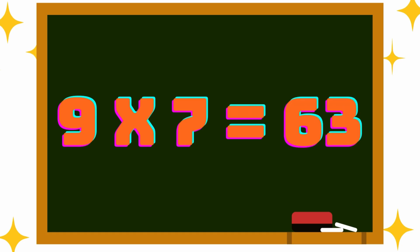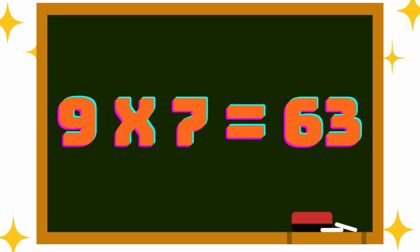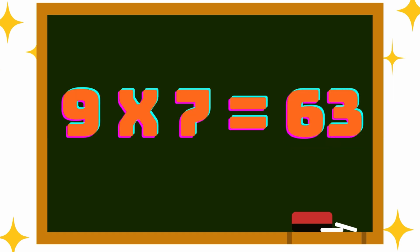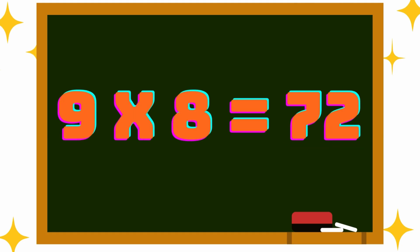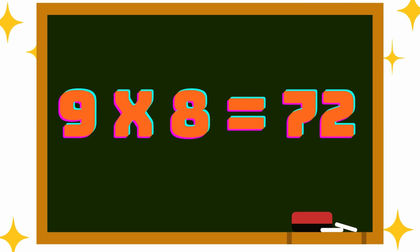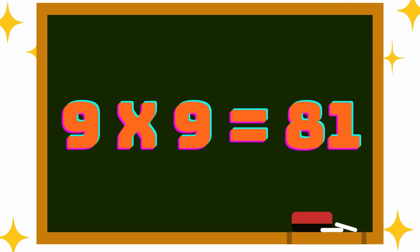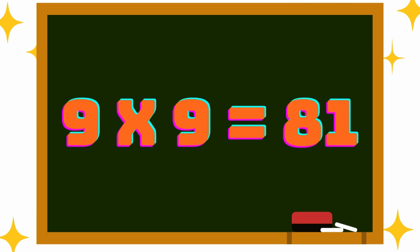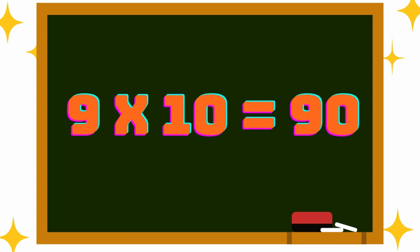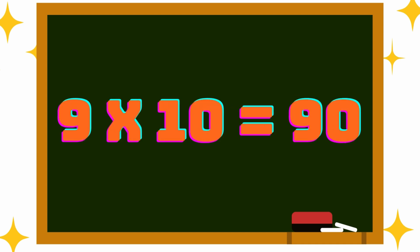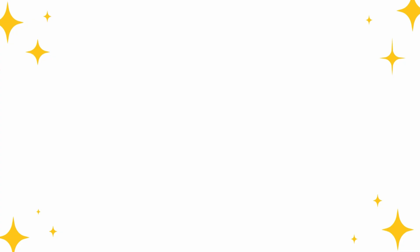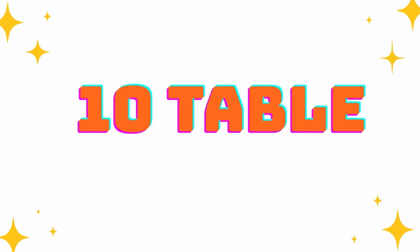9 sevens are 63. 9 eights are 72. 9 nines are 81. 9 tens are 90. Next one, 10th table.